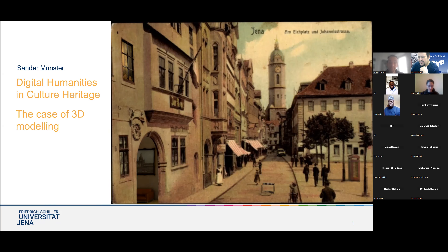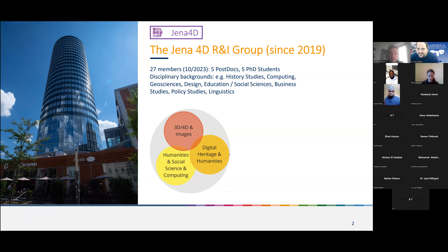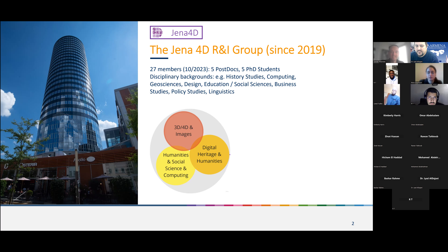Let me briefly start with an introduction of who we are. We are based in Jena in a nice building where also the Armina headquarters is located. As a research group, we have been extant since 2019, currently having 27 members — five postdocs, five PhD students. I'm happy that we have more or less the same number of disciplines as members, giving us a very interdisciplinary view on digital heritage and digital humanities, using methods from humanities, computing, and social sciences.